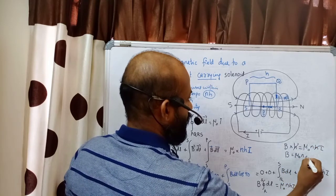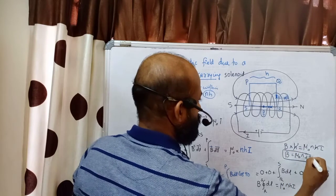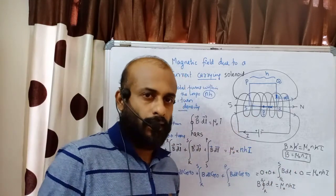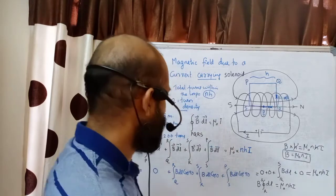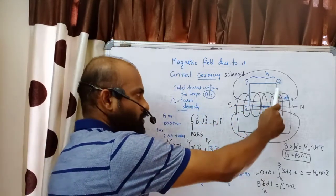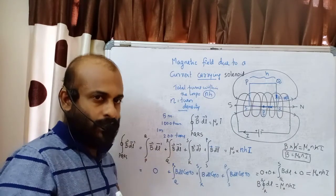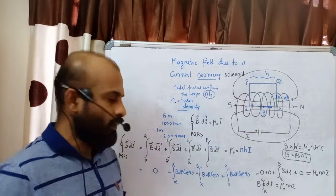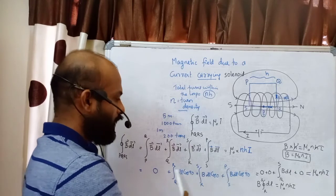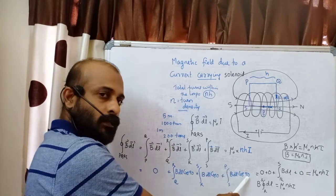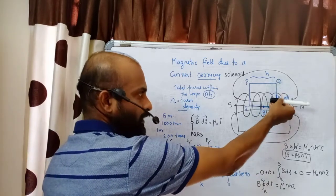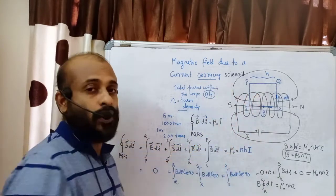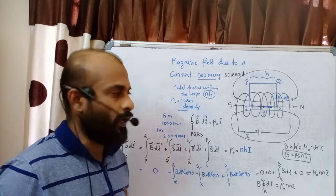Combining results: 0 + 0 + ∫(R to S) B·dL + 0 = μ₀·n·h·I. Since B is uniform inside, B × h = μ₀·n·h·I. Cancelling h from both sides, we get B = μ₀nI. This is the magnetic field at an interior point of the solenoid.